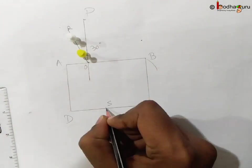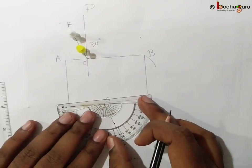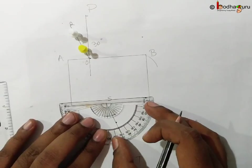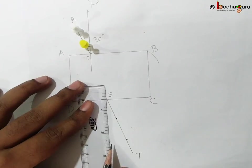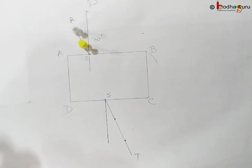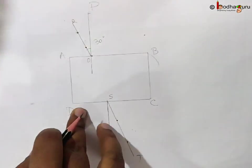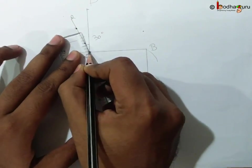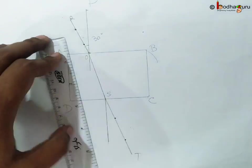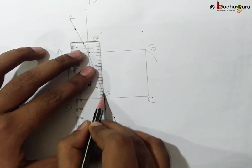If you join the dots made by these two new pins, you will get a straight line. Let's name it ST. If we draw a perpendicular at S, ST will make a 30-degree angle with the normal at point S. We join O and S.